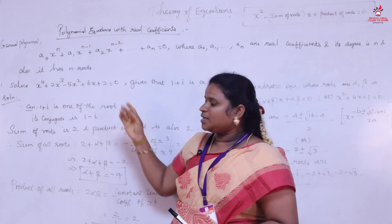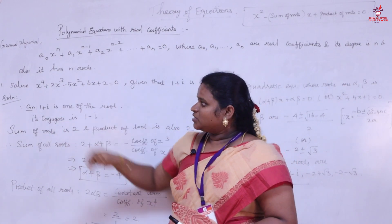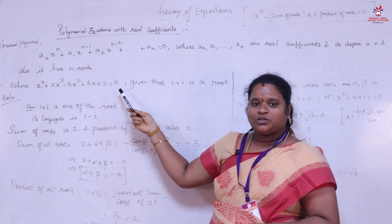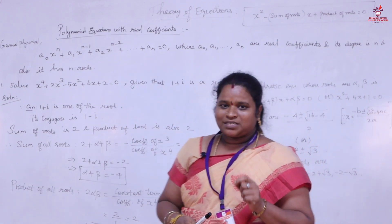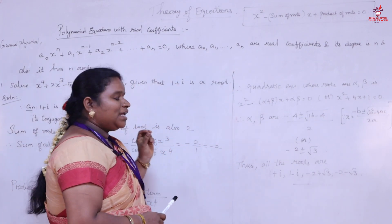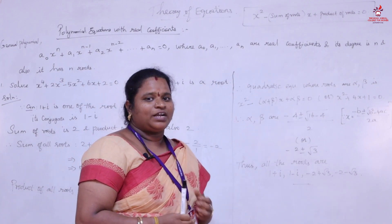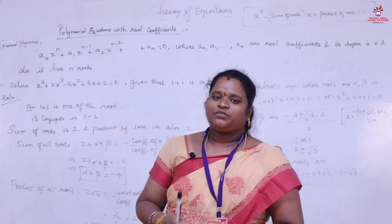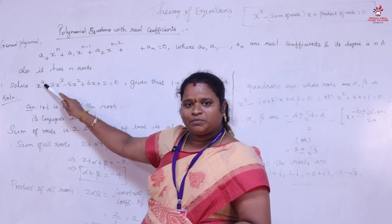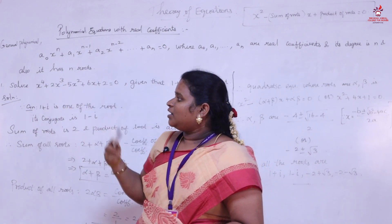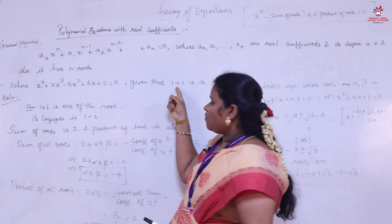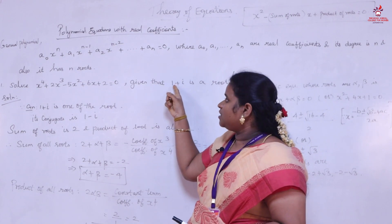Let us see a problem. Solve x⁴ + 2x³ - yx² + 6x + 2 = 0, given that 1 + i is a root. We need to find the roots of this equation. First, we find the degree: the highest degree is 4, so we need 4 roots. We already have one root, 1 + i, so we need 3 more roots.